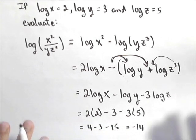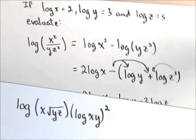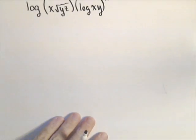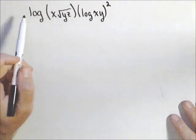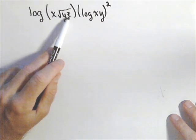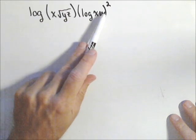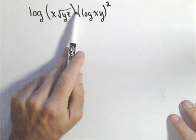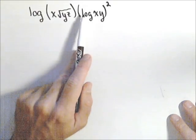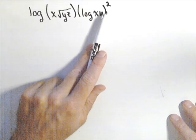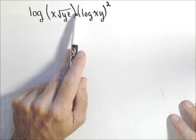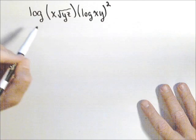So that's what these kind of problems are asking us to do. Let's look at a little bit more complicated example and see what we can come up with. Here I have log of x times square root of yz times the quantity of log xy squared. Now, these are separate logs, so I don't have a property for the multiplication of two logs. Also, this square is outside the log, so I cannot pull that out front. So what I'm going to have to do is deal with these separately.